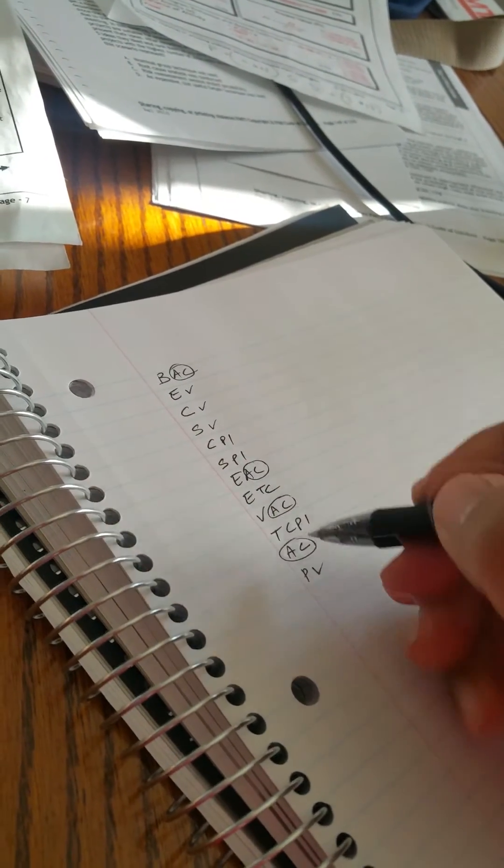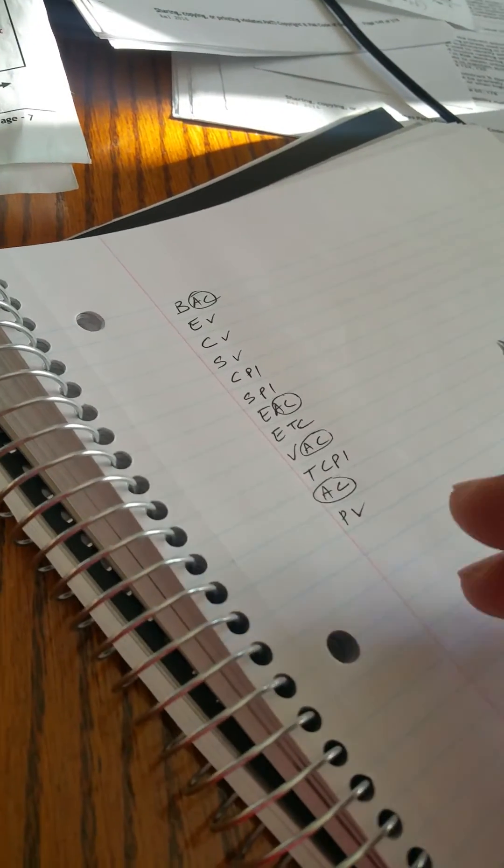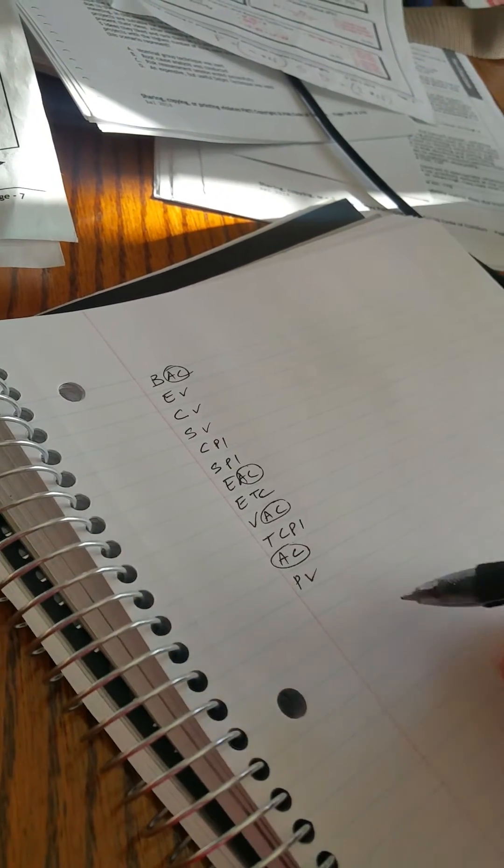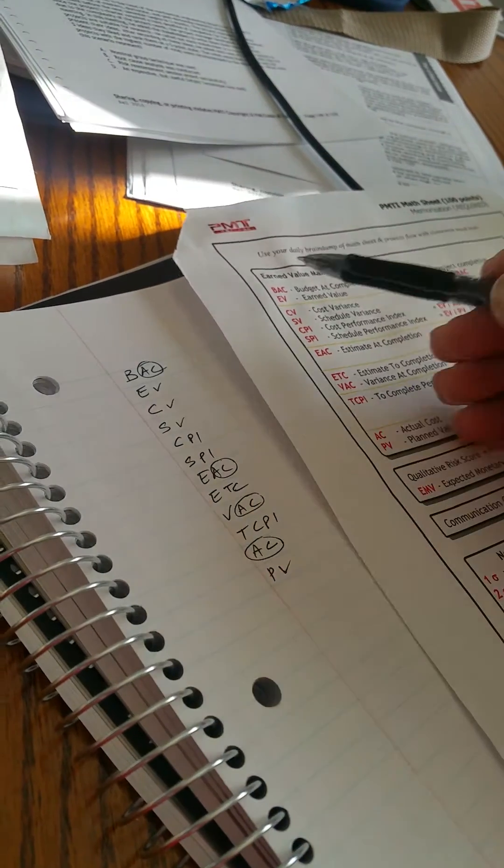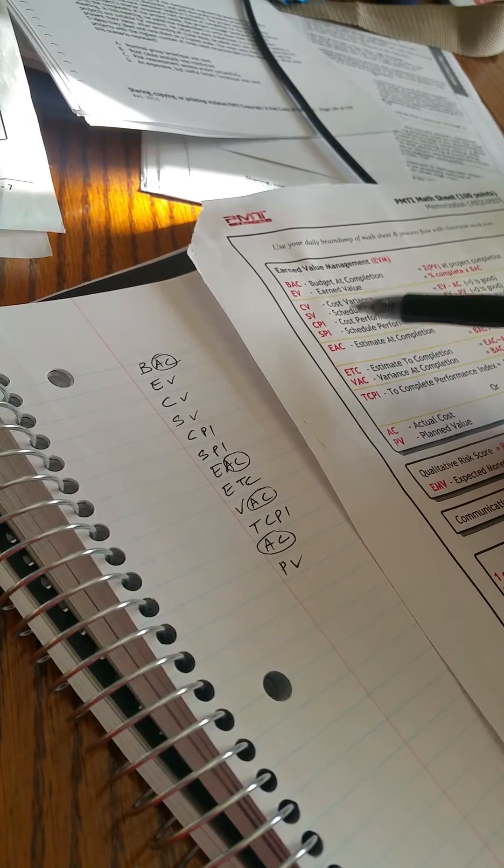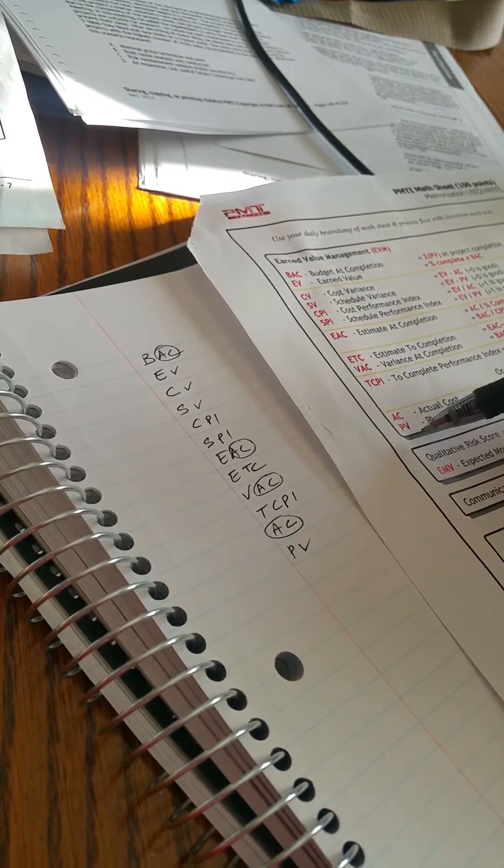Also check that we got V, V, V, V, P, I, P, I, P, I, P, I. So many ways to keep things in check as I complete the first part of the equation. So BAC, EV, CV, CSV, CPI, SPI, EAC, ETCV, ACTC, PI, ACVPV.